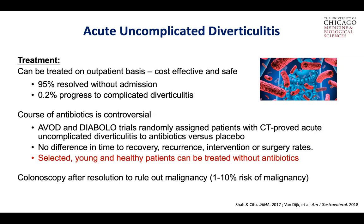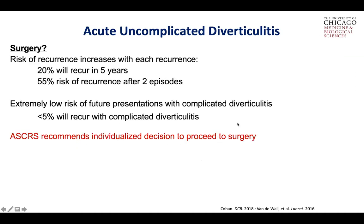What most commonly happens is that while the surgeon might not see these patients on initial presentation, they're often referred to a surgeon after multiple episodes to see if prophylactic sigmoid resection is indicated. The risk of recurrence increases after each episode. After the first episode, there's about a 1 in 5 chance of recurrence in 5 years, but after the second episode that goes to 1 in 2. However, they're at extremely low risk of converting to complicated diverticulitis no matter how many recurrences they have. Thus, the current recommendation is that an individual decision to proceed to surgery should be made between the surgeon and the patient.